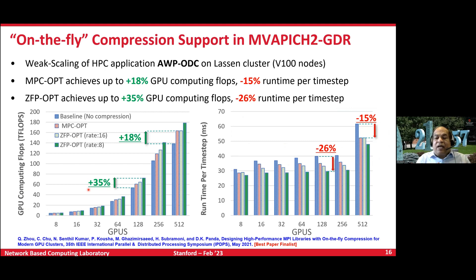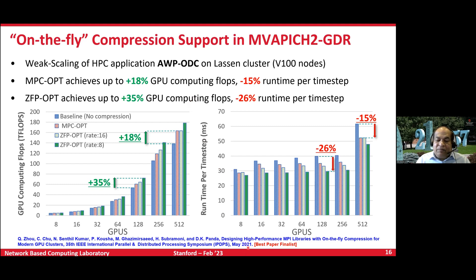Beyond CUDA-awareness, for the last several years we've been working on on-the-fly compression. GPUs have so many cores, and when doing communication a lot of those cores are idle. The idea is to use those idle cores to compress the data — especially large data — then send it, so overall latency is shorter and bandwidth improves. We presented this at IPDPS 2021, where it was a best paper finalist. Sample numbers show AWP-ODC, a seismic simulation, with almost 35% performance boost, and 26–50% reduction in overall execution time.